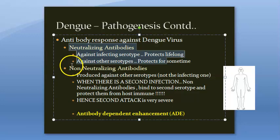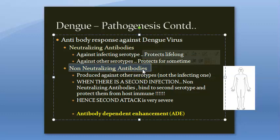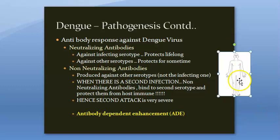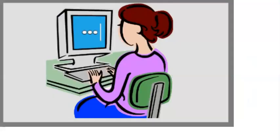Our body makes neutralizing antibodies, which protect us lifelong, and non-neutralizing antibodies produced against other serotypes. When a person gets a second attack of dengue from a different serotype, the non-neutralizing antibodies from the first infection bind to the new serotype and actually protect the virus from our immune system — which is devastating for us.